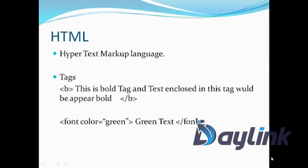There are also attributes in tags. The font tag is generally used to give several styles to our font. For example, if we want to give color and size to the text we can use the font tag. We pass the attribute in the font tag and give the property of that attribute. For example, we are giving green to our color attribute, so the text will be displayed in green color. This is about HTML markup, tags, and attributes.